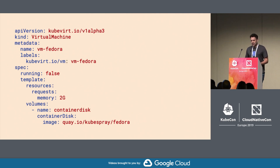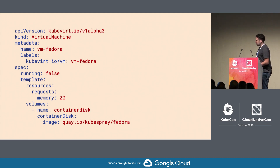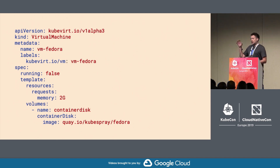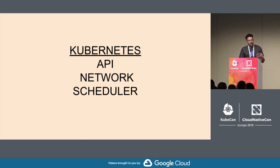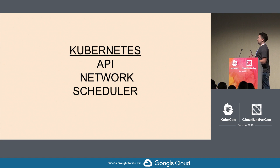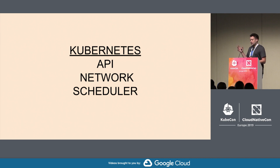KubeVirt defines a new Kubernetes resource — a VirtualMachine CRD — to define your VM. You can define your resources, and one interesting point is that you can embed your VM image inside a container. So you can reuse all the container registry infrastructure to manage and store VM images. Now we have a tool where we can use everything we're familiar with in Kubernetes: the API via CRDs, shared networking, and the scheduler. When you request a VM with, say, two gigabytes of RAM, the Kubernetes scheduler will position it on different nodes.